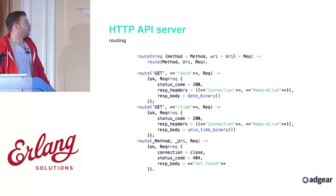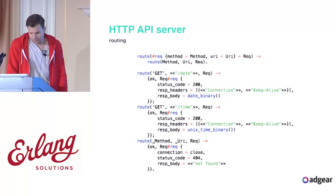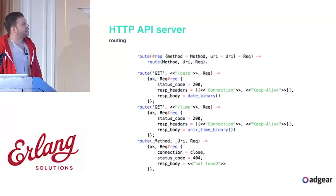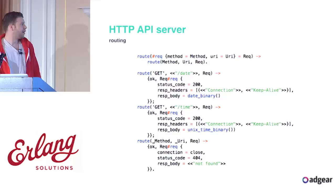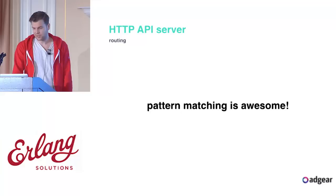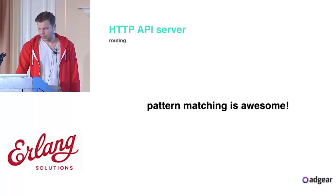For routing in this case, we don't need anything fancy — pattern matching does everything we need. We take the method and URI and pattern match on whether it's GET /date or GET /time; if not, we return a 404. Can we make that faster? Honestly, I'm not sure unless we drop to C. Pattern matching is really awesome and it's fast.